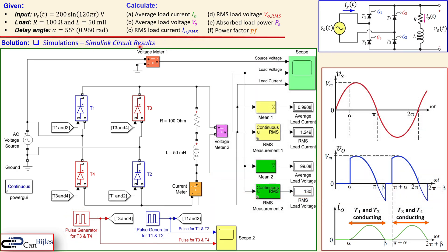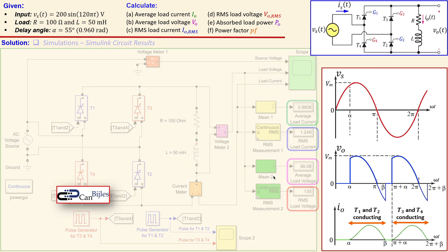The Simulink simulation results closely match the calculations: average load voltage = 99.09 V (calculated: 99.07 V), RMS load voltage = 130.0 V (exact match), average load current = 0.9908 A (calculated: 0.9907 A), and RMS load current = 1.249 A (exact match). The small differences are due to rounding errors.